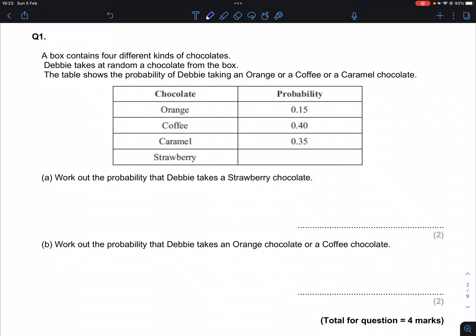Three of them have been given, one of them has not. Now, because this box only contains these four, all of these probabilities should add up to one.